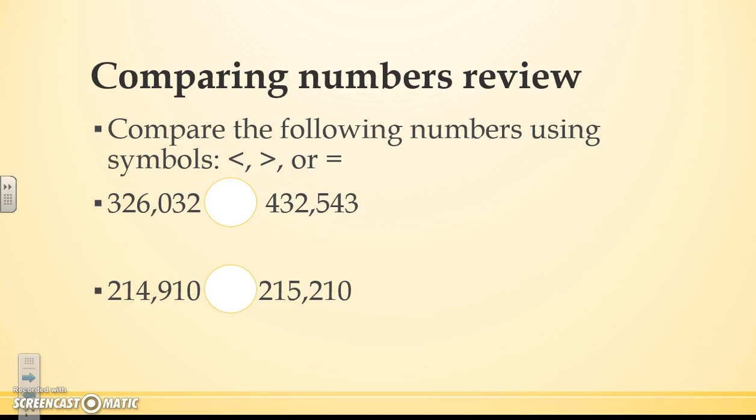So let's do some review. We're going to compare these numbers. Remember the steps that we use to compare numbers? First we lined up place values, so we're going to do this first one now. So I have 326,032 and lining up my place values I have 432,543.